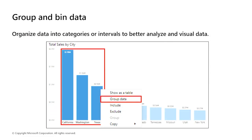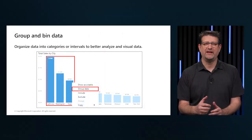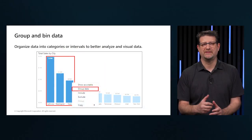Grouping is used for categories of data, and binning is like grouping but it is used for grouping continuous fields such as numbers and dates. Use the grouping and binning feature to ensure the visuals and reports display exactly what is intended. This allows for better viewing, analyzing, and exploration of the data and the trends in the visuals. Use grouping or binning to identify clusters, patterns of behavior, data averages, and more. The results of this analysis will provide end users with more specific insights on the data.